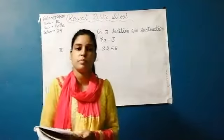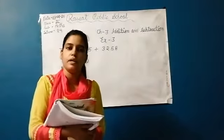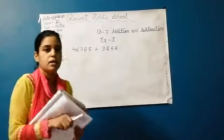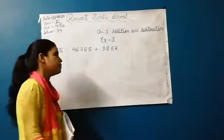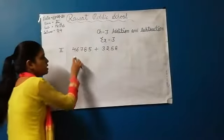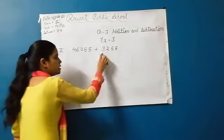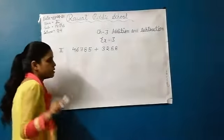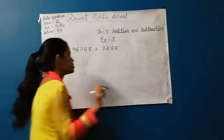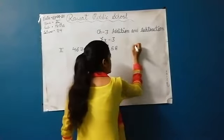Now come to question number 2: arrange the following numbers in columns and add. For example, this is a 5-digit number and this is a 4-digit number. The question requires students to arrange these numbers correctly.